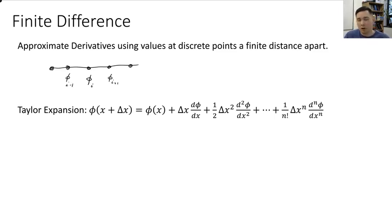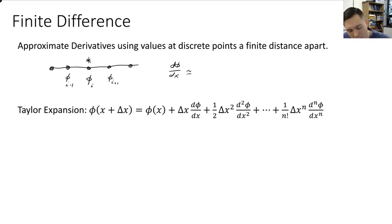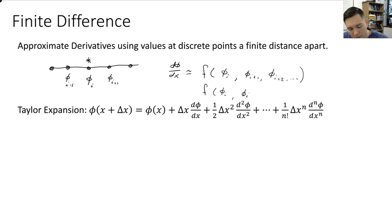Going back to that number line, let's say we have discrete temperature values at various locations — φ_i, φ_{i+1}, and φ_{i-1}. We want to approximate either the first or second derivative at position φ_i. For a finite difference approximation, we approximate dφ/dx as some function of φ_i and its neighbors. If the neighbors are all on one side — φ_{i+1}, φ_{i+2}, and so forth, or φ_{i-1}, φ_{i-2} — these are sided approximations.